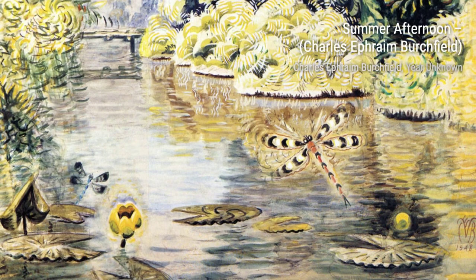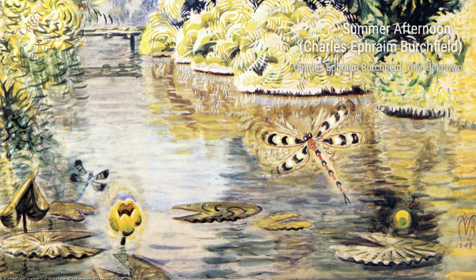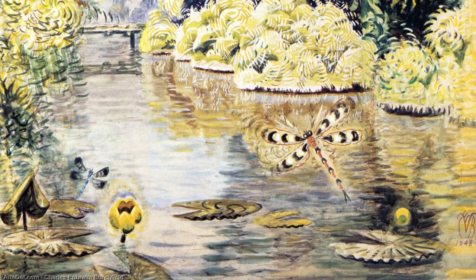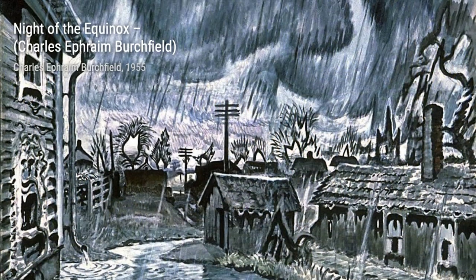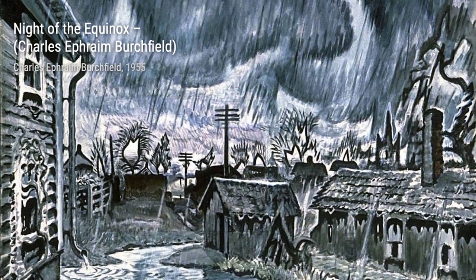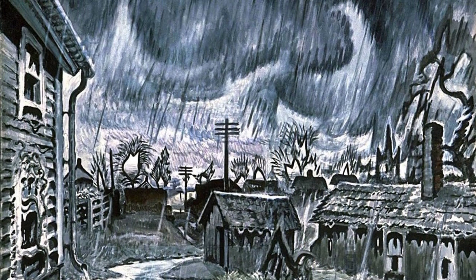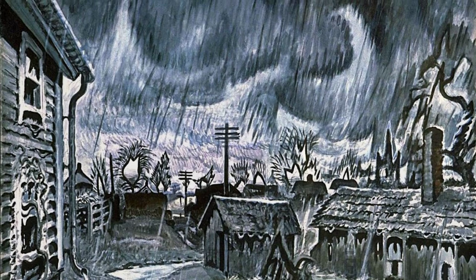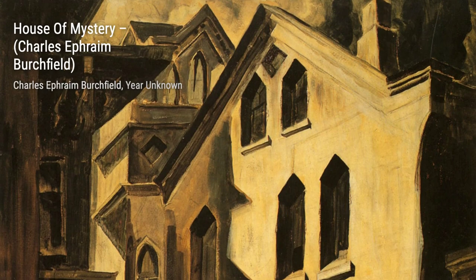As dusk settles in, we encounter Moonflowers at Dusk. Birchfield's use of light and shadow creates a magical atmosphere, as if the flowers are glowing under the moonlight. Now let's explore Street Vista in Winter. Birchfield captures the quiet stillness of a winter street, with the snow-covered houses and the soft glow of streetlights.